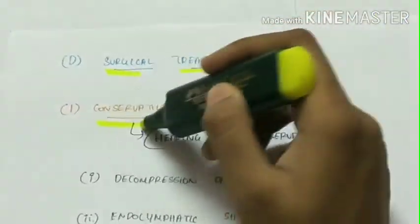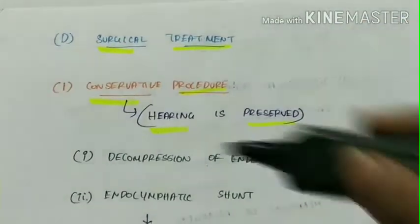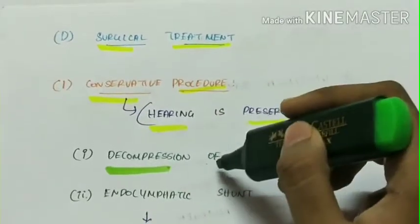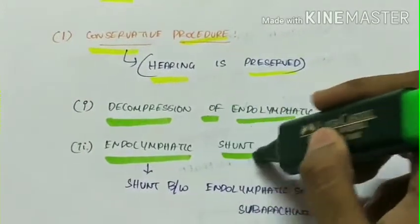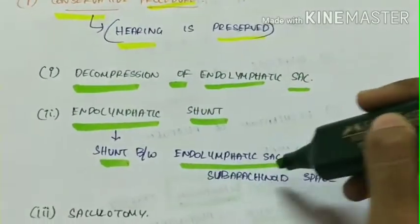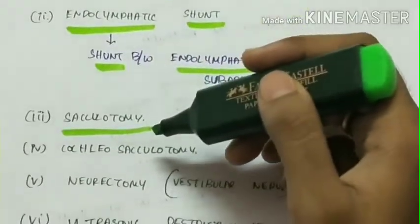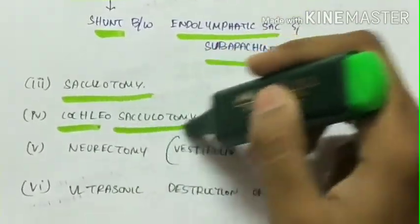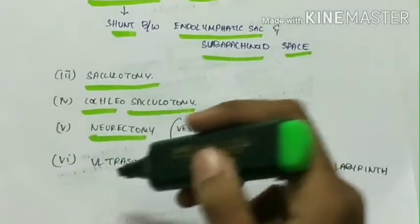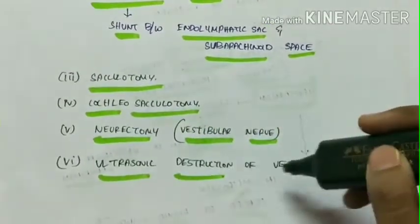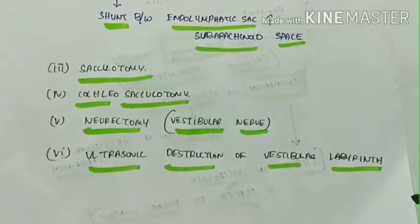Lastly, the surgical treatment. First, conservative procedure in which hearing is preserved. We can do decompression of the endolymphatic sac. Next, we can create an endolymphatic shunt, a shunt between endolymphatic sac and the subarachnoid space. Third, sacculotomy can be performed. Cochleosacculotomy can be performed. Fifth is neurectomy. Vestibular nerve neurectomy can be performed. Or sixth is ultrasonic destruction of the vestibular labyrinth. These are all the conservative procedures in surgical treatment.